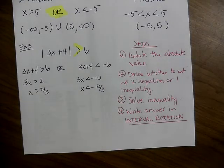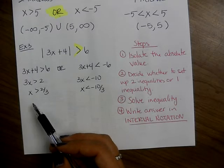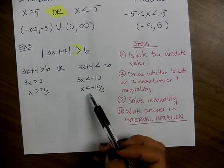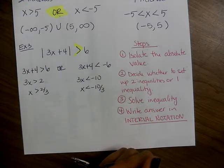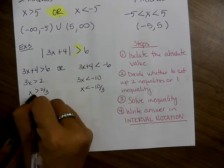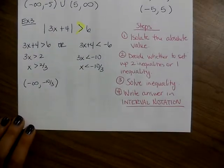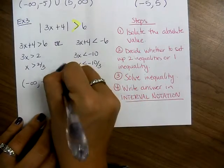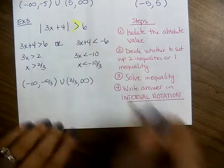Remember, you always have to have the smallest number on the left. x greater than goes toward positive infinity, so that goes on the right. x less than negative 10/3 goes toward negative infinity, so that's where we start. The answer is (negative infinity, negative 10/3) union (2/3, positive infinity) — both with parentheses because we have strict less than and greater than signs.